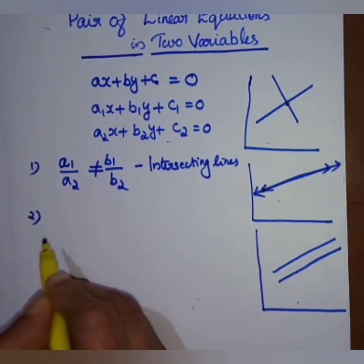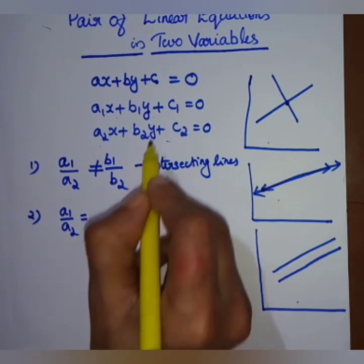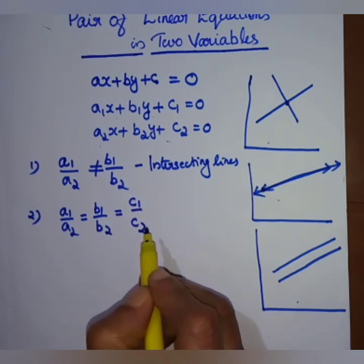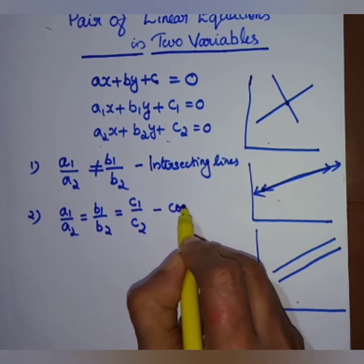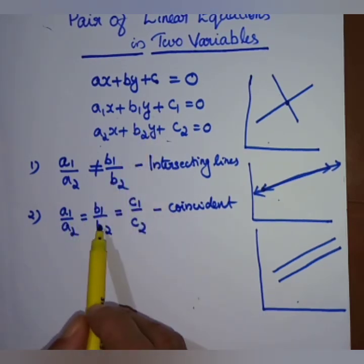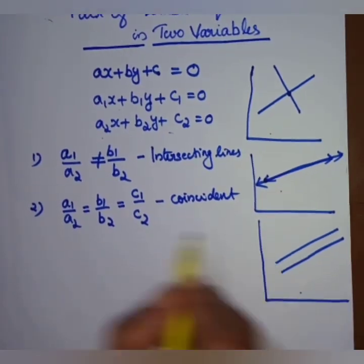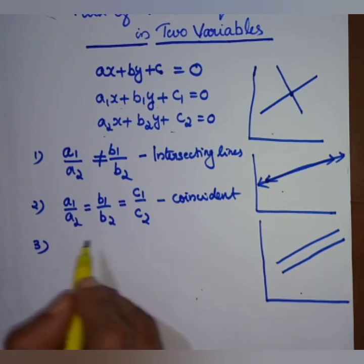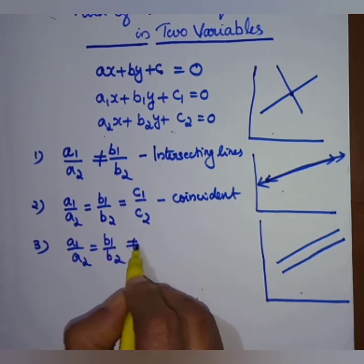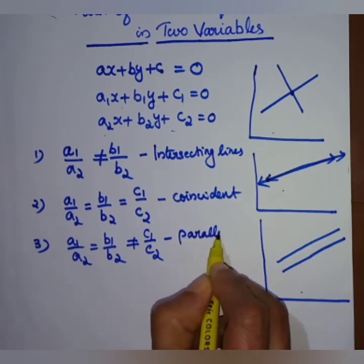The first case: a1/a2 is not equal to b1/b2 — intersecting lines. The second case: a1/a2 = b1/b2 = c1/c2 — coincident lines. The third case (parallel lines): a1/a2 = b1/b2, but is not equal to c1/c2.